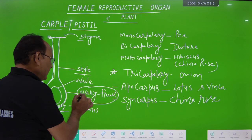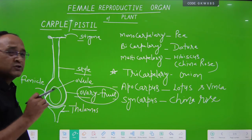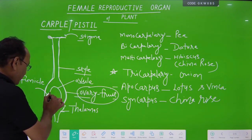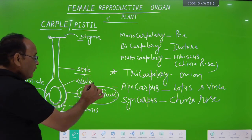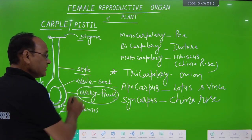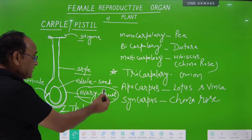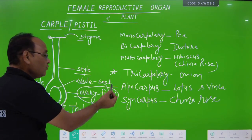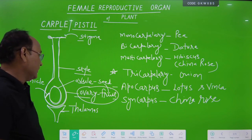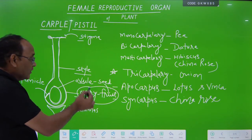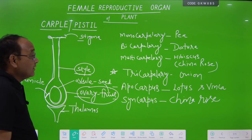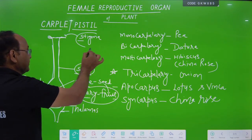Especially inside the ovary, another structure is also found which is called the ovule. The ovule converts into seed after fertilization. So the seed is enclosed inside the fruit. To summarize: first part is ovary, second part is style, and third part is stigma.